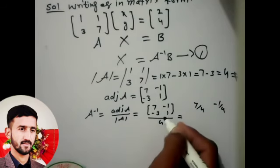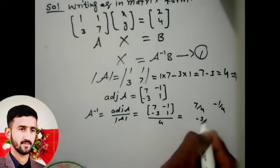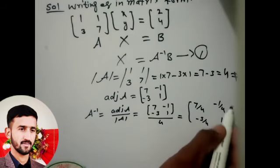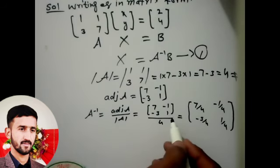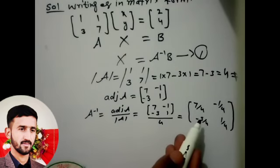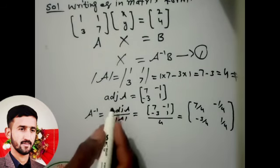Divide by 4, and minus 3 by 4. Divide by 4 any one element in adjoint A matrix. So this is A inverse.